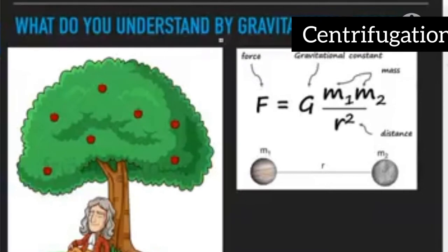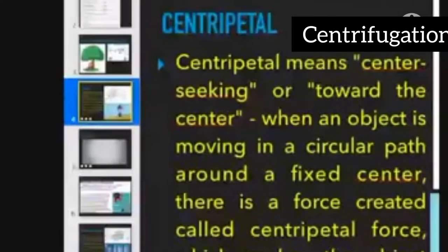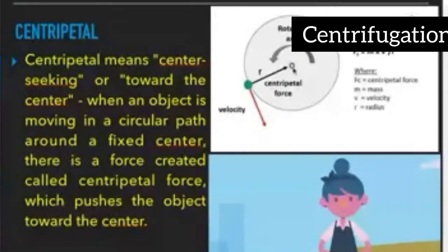The term centripetal comes from a Greek word which actually means 'center seeking' — towards the center. You can see the force which is directed towards the center. This force is called centripetal force. When an object moves in a circular path around a fixed center, a force is created called centripetal force, which acts on the object.